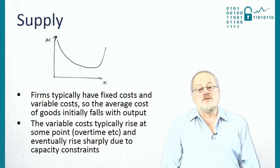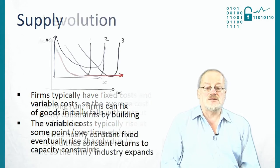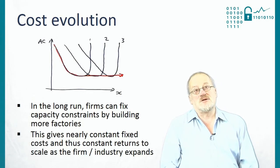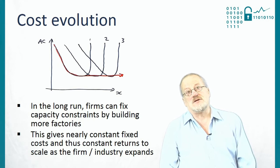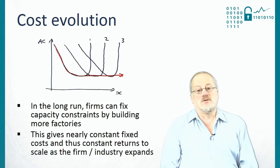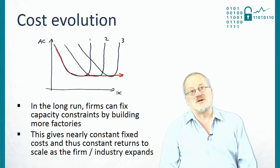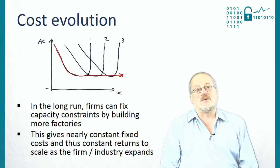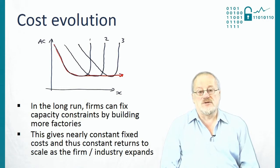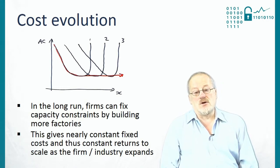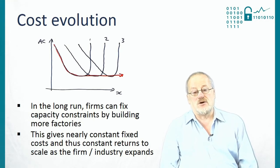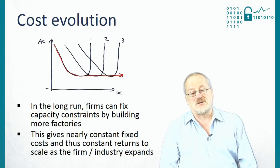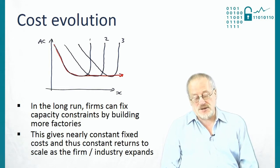In the long run, firms can increase capacity by building more factories. Someone who owns a coal seam can dig more mines; a car manufacturer can open factories in other countries. In the long run, this can give nearly constant fixed costs and thus constant returns to scale as the firm or industry expands.